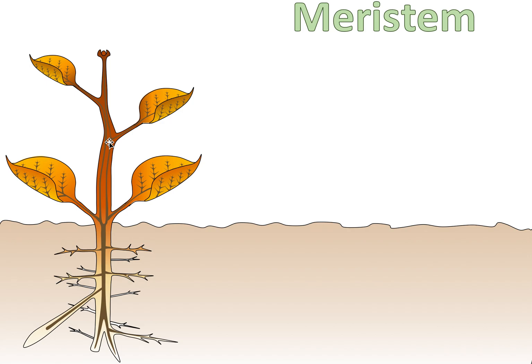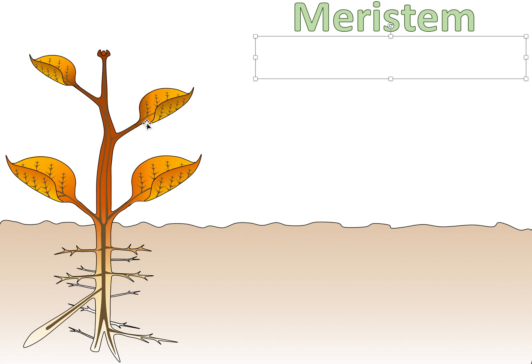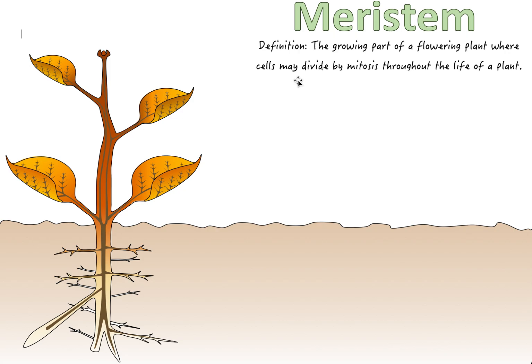Now what we don't know is what a meristem is — or maybe you do, but this is not as common to know about. A meristem is essentially, in simple words, any place on the plant where growth can occur — any place that can do mitosis to be able to promote growth.